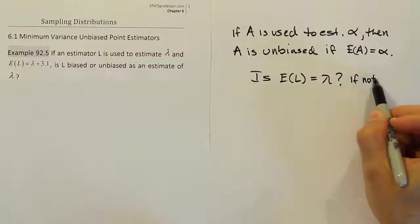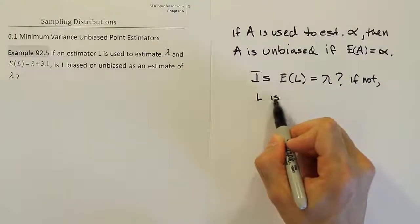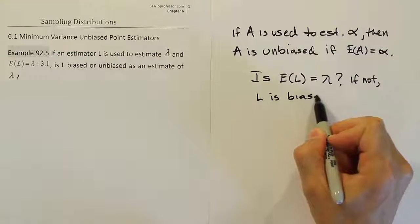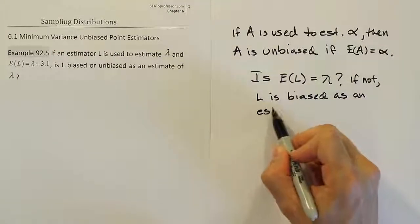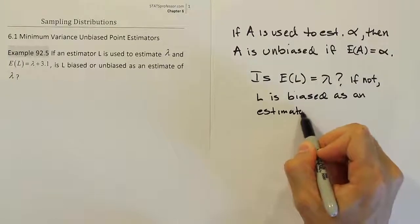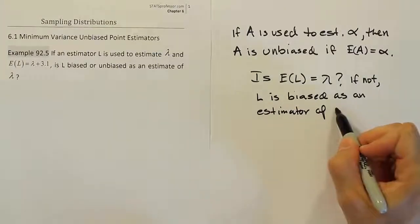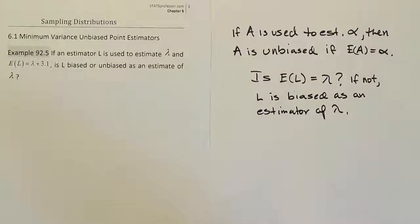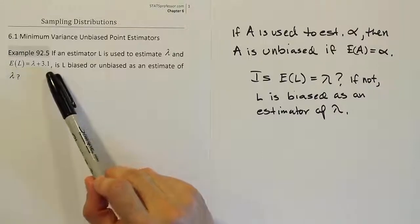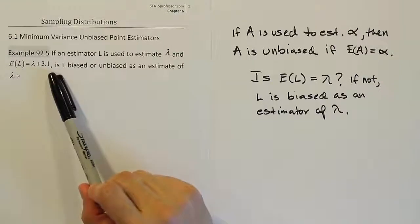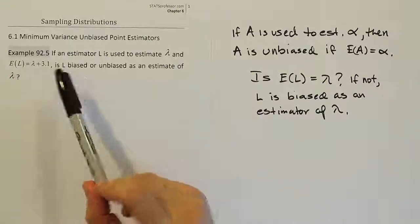If not, L is biased as an estimator of lambda. So that's all you have to do in this problem. The answer to this question is no, it's not. It's equal to lambda plus 3.1, so it's actually a biased estimator.